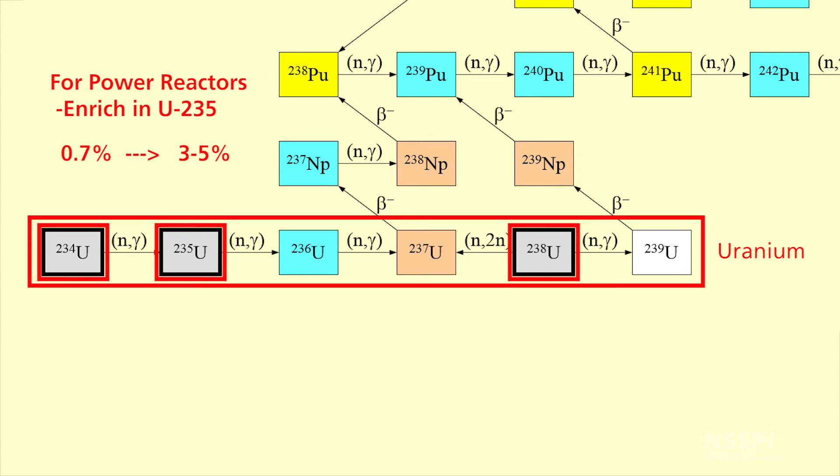This material, this U-235, is what would cause fissions inside of the reactor and give you power. Most of the reactions that would occur in the U-235 isotope would be fission reactions.